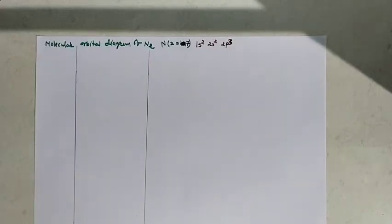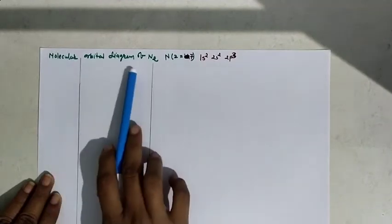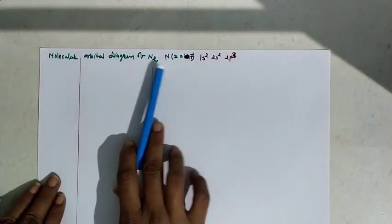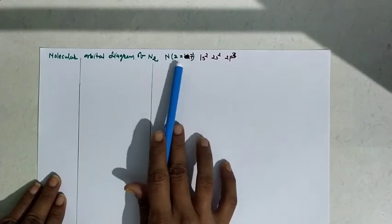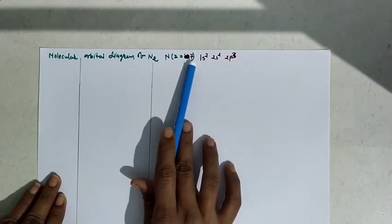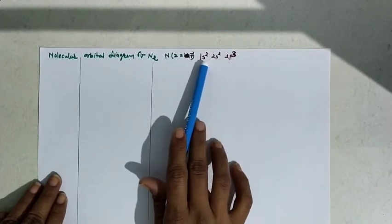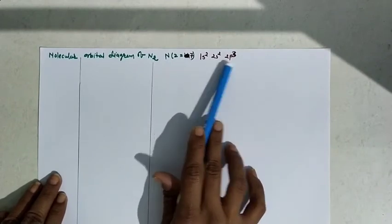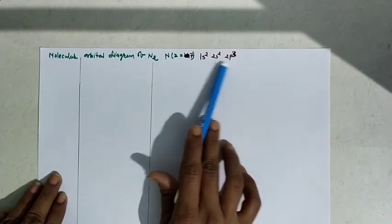Hello dear students, today we are discussing the molecular diagram of N2. First of all we have to write its electronic configuration, nitrogen. Nitrogen atomic number is 7, so it has 7 electrons and electronic configuration is 1s2, 2s2, 2p3. 2 plus 2 plus 3 equals 7.